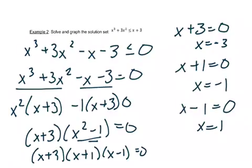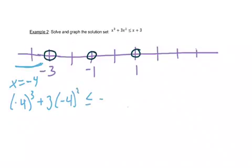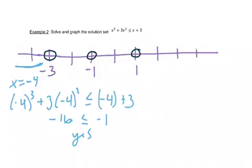So I want to put on my number line negative 3, negative 1, and 1. I've marked those on the number line and this breaks it up into pieces. I'm going to start with the piece over here on the far left and choose negative 4. I'm going to put that into my original problem to see if it makes a true statement. On the left hand side I get negative 16, on the right hand side I get negative 1. Well, negative 1 is bigger than negative 16, so I want to shade this part in.